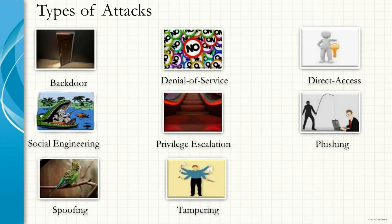Next is Tampering. Deliberately destroying, manipulating, or editing data through an unauthorized channel is what is called Tampering. Data exists in two states — either in transit or at rest — and both can be tampered with. Some examples of tampering include cookie tampering, HTML form field tampering, URL query string tampering, HTTP header tampering, etc. Tampering is one of the biggest security threats faced by web applications.